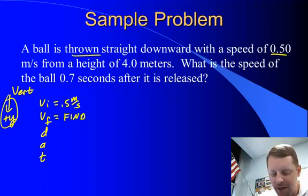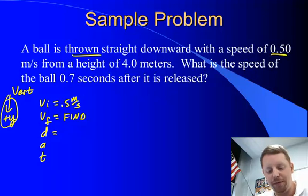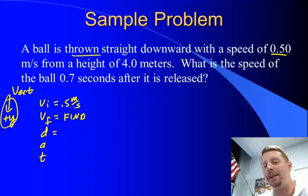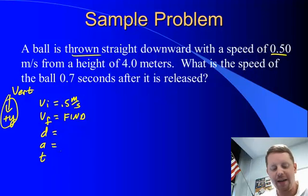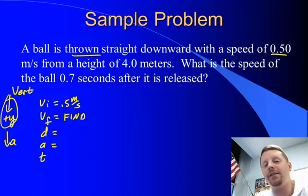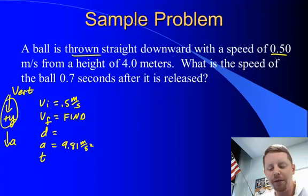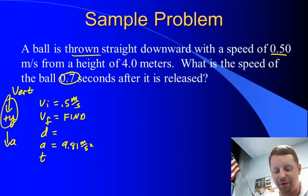The ball is not dropped — it's thrown down — so its initial velocity is positive 0.5 meters per second, because it was thrown downward and we called down the positive y direction. We're trying to find vf. Here's a little trick: the problem says the ball was released from a height of 4 meters, not that it travels 4 meters, so we don't know the displacement yet. The acceleration is positive 9.81 meters per second squared, and the time is 0.7 seconds.